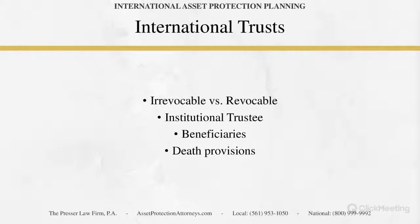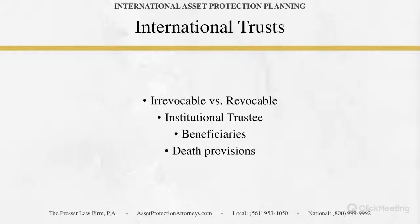So where is the asset protection if a client is able to benefit from the trust? It comes in many forms. Number one, it's in the fact that the trustee is absolutely not going to be the client. The trustee should never be an individual, and should never be a U.S.-based individual, corporate trustee, or bank. It should be an international trustee — an international company set up as a trust company — and they should be in total control of the trust.